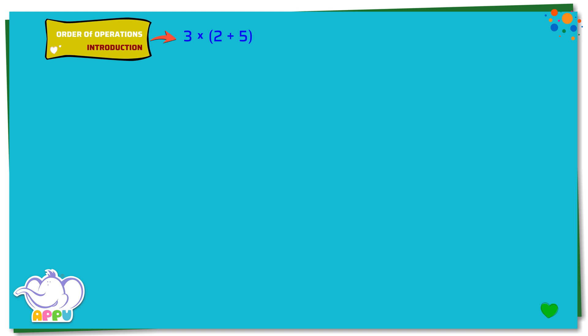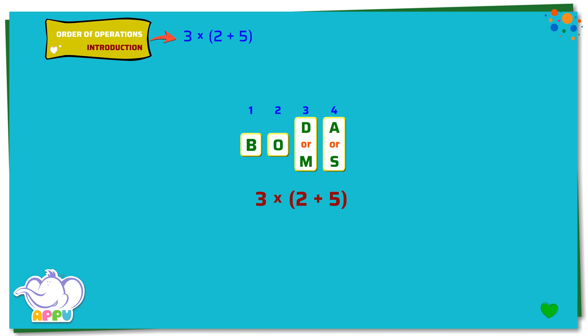Solve this: 3 times (2 plus 5). Let's use BODMAS to solve this problem. We first look for brackets. We have 2 plus 5 in the brackets, which equals 7. This becomes 3 times 7. Let's ignore order for now. Next, we look for division or multiplication since both rank equally. We have multiplication: 3 times 7 equals 21. So the answer is 21.